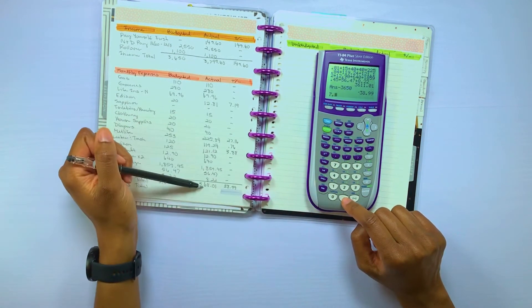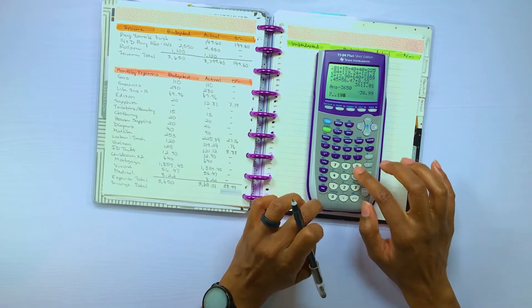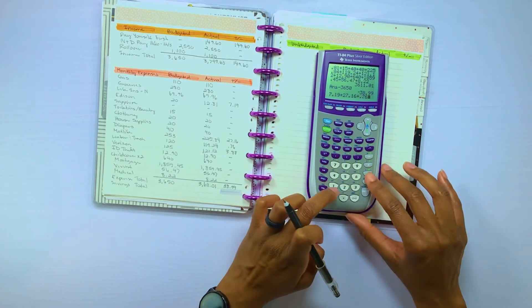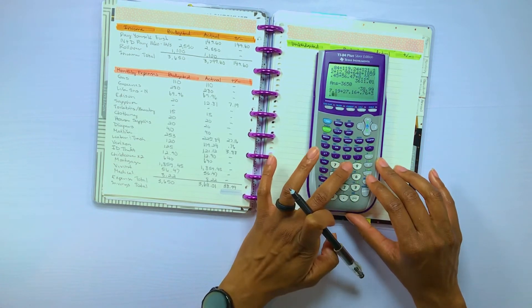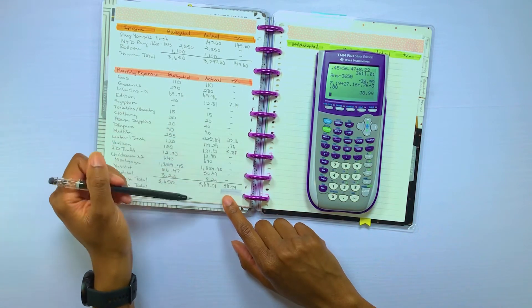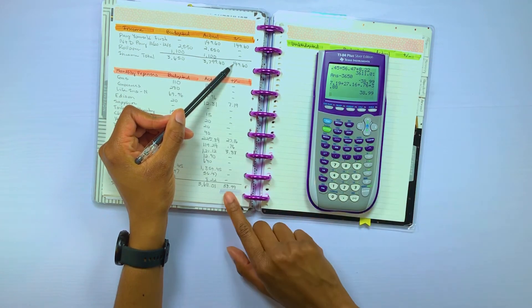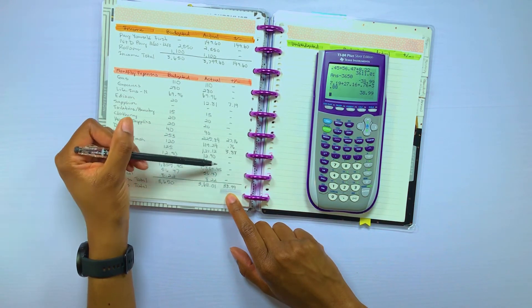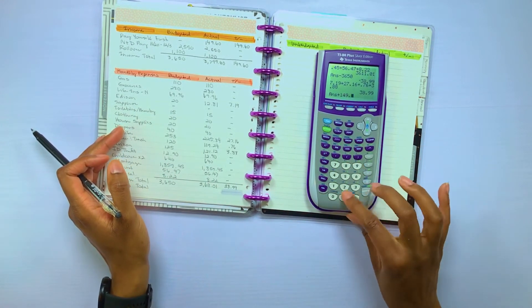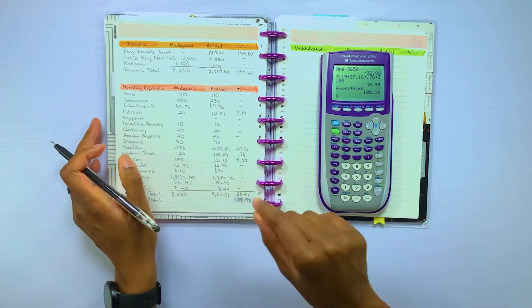So the actual expenses was $3,611.01. So now I'm going to add up the differences. I cannot multitask, y'all. So usually I'm just quiet when I'm doing the differences, but I'm trying to talk through it. So these did add up to $38.99, which tells me that all of my math right here is correct. So now I'm going to add the income that we put away from pay yourself first with the money remaining from our expenses and see what we were actually able to put aside in savings for this paycheck. So $188.59 is what we were able to put away for this paycheck. That's paycheck number two.